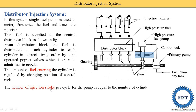The number of injection strokes per cycle for the pump is equal to the number of cylinders. This pump supplies diesel to the distributor block. For a four-cylinder engine, it supplies fuel four times per cycle.